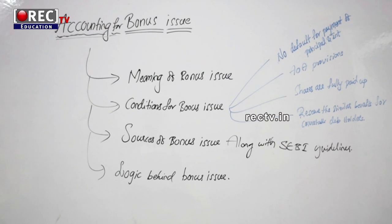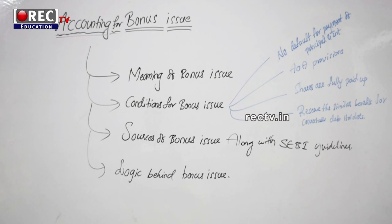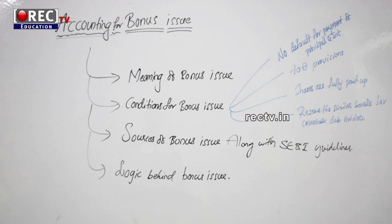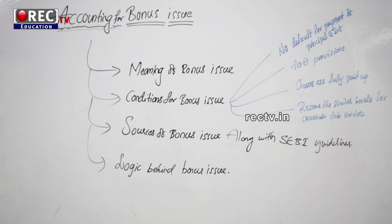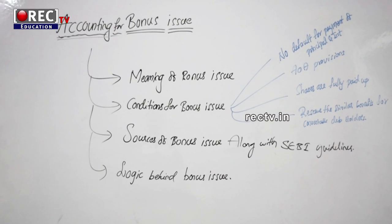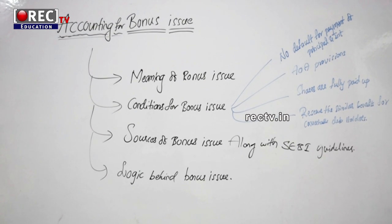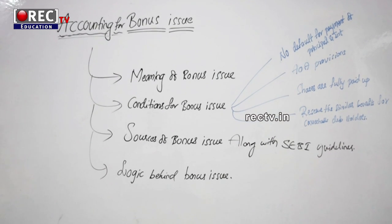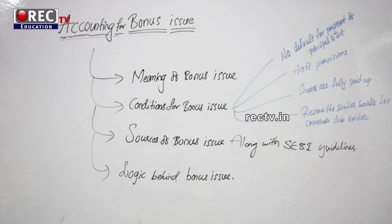The last condition is to reserve similar benefits for convertible debenture holders. Consider this example: your authorized capital is 10 lakhs and you have already issued 10 lakhs fully. You need more money for development, so you collect from some people, give them debenture certificates, and tell them that after some period the debentures will be convertible to equity shares. Now when you go for a bonus issue, those debenture holders also ask about their bonus shares. Since the company promised conversion to equity, you should reserve some bonus shares for those convertible debenture holders. If all four conditions are satisfied, you can proceed with a bonus issue.